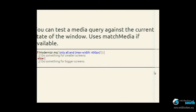You can also test media queries. This tests against the current state of the window, so it's Modernizr.mq. That'll test if the current window is no bigger than 400 pixels. Then you can do if/else and work around that. It uses the MatchMedia API, which is in the good browsers, and it falls back to using another method to detect it in ones that do support it. If it doesn't support media queries at all, it'll just return false all the time.